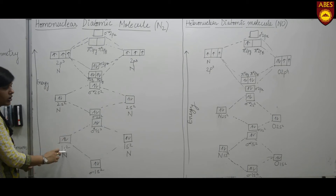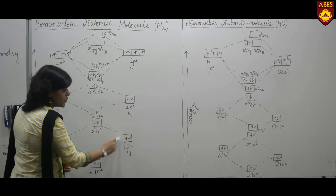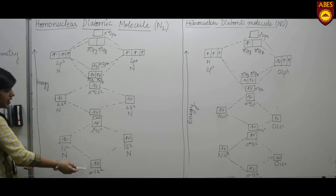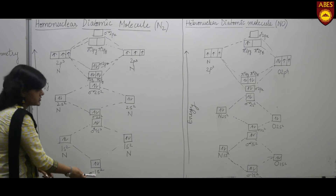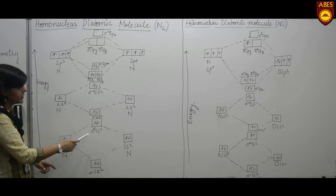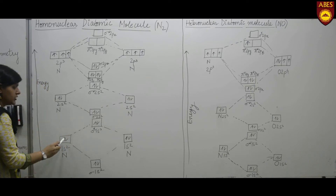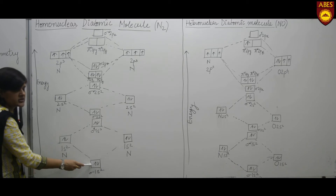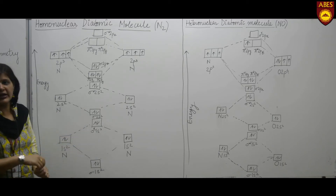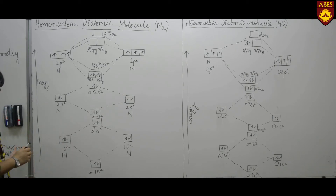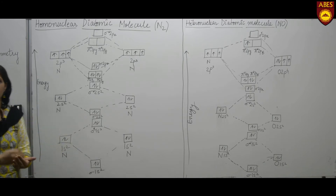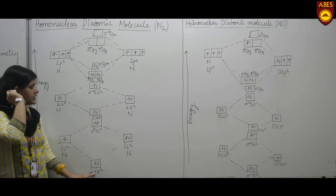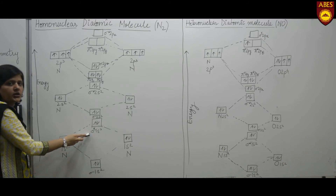This is the 1s² of one nitrogen atom and this is the 1s² of another nitrogen atom. These two orbitals combine to form two molecular orbitals: one bonding molecular orbital which is σ1s², and another which is the antibonding counterpart σ*1s². Both atomic orbitals contain four electrons total, so two electrons are accommodated in the bonding MO and two in the antibonding MO, following the Aufbau principle, Hund's rule, and Pauli's exclusion principle.